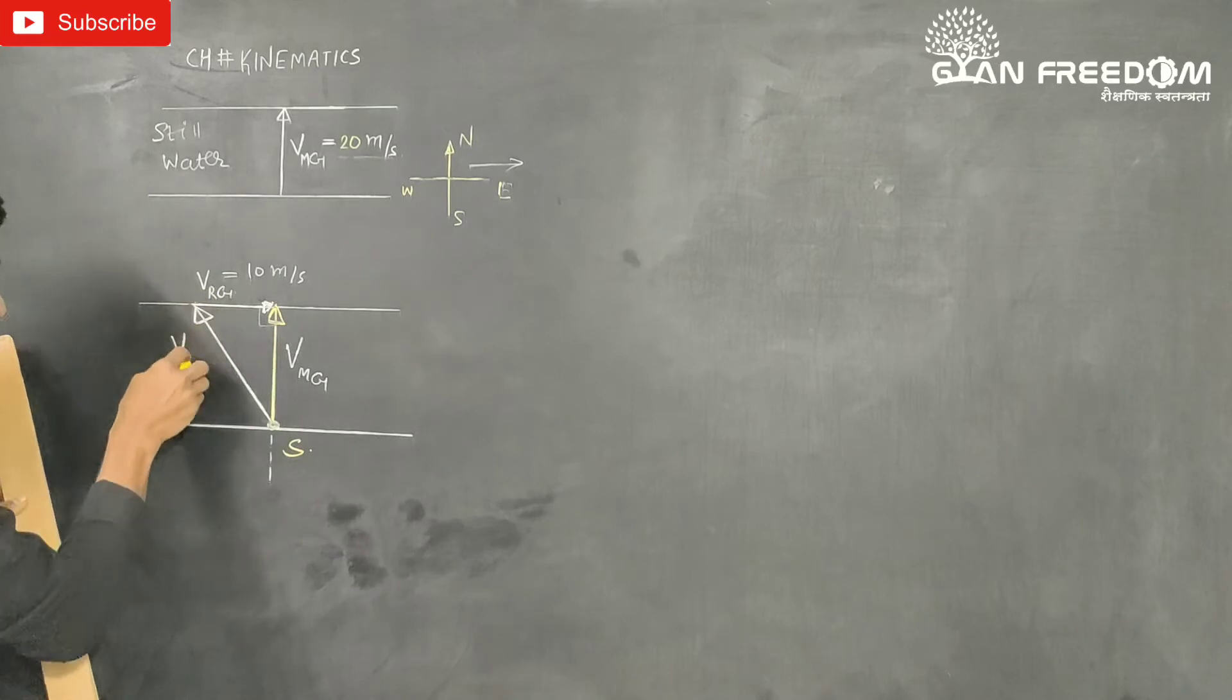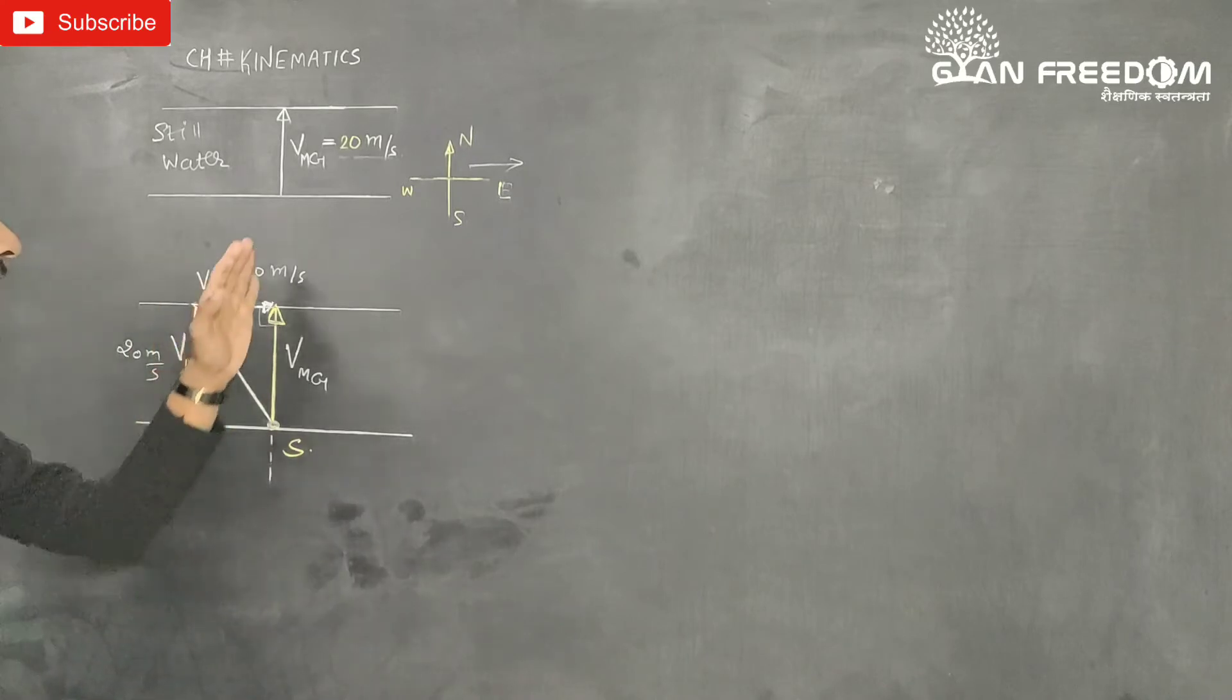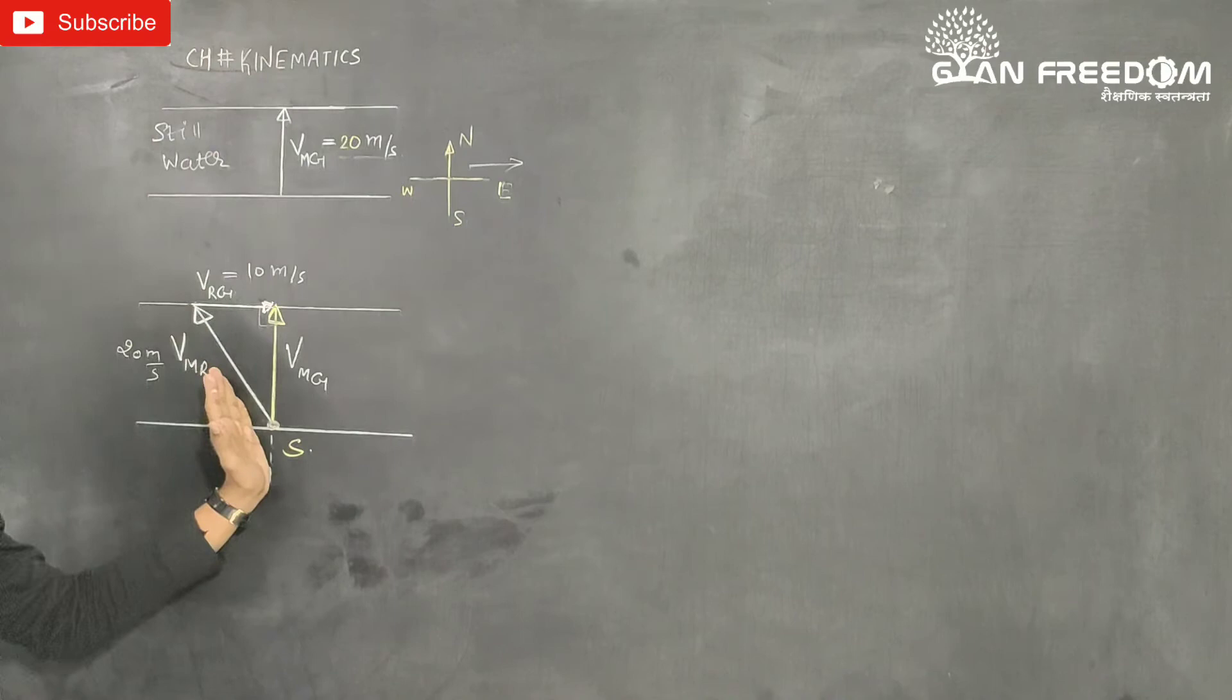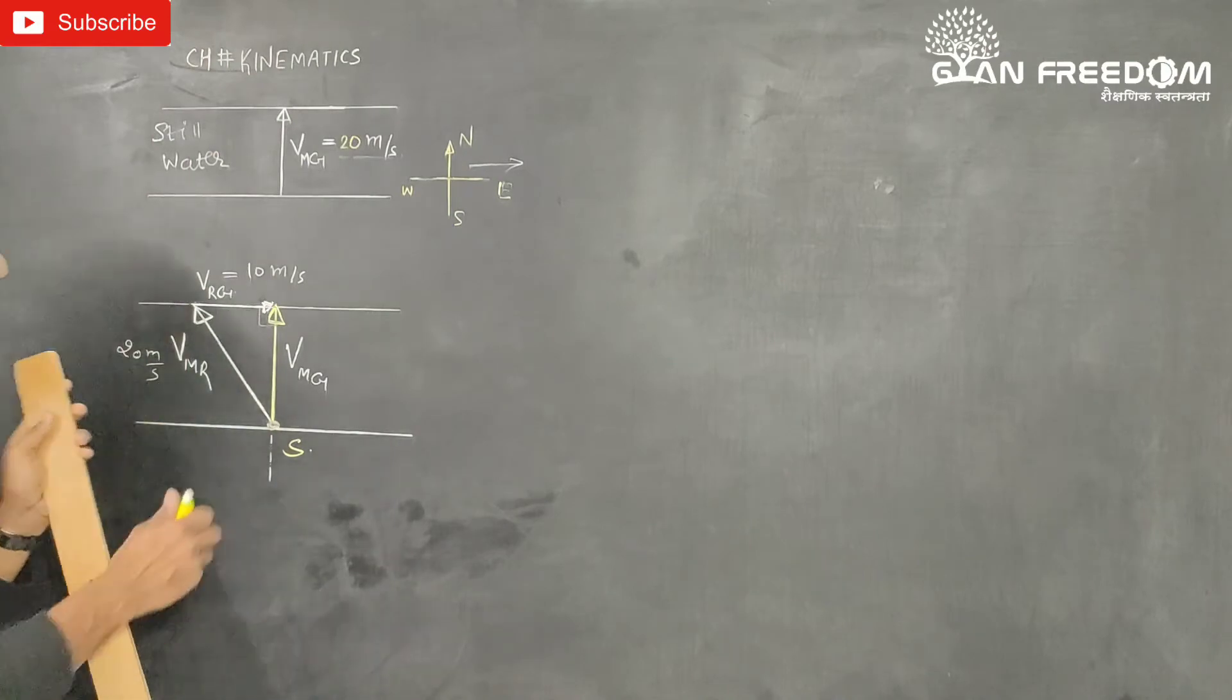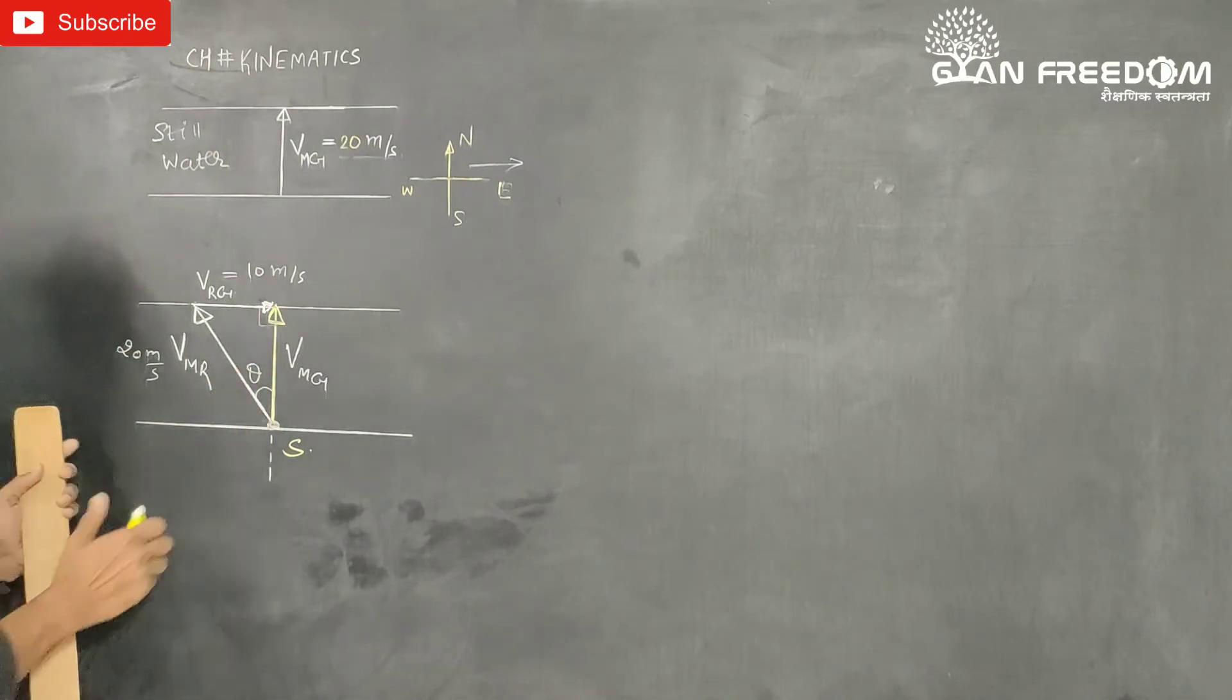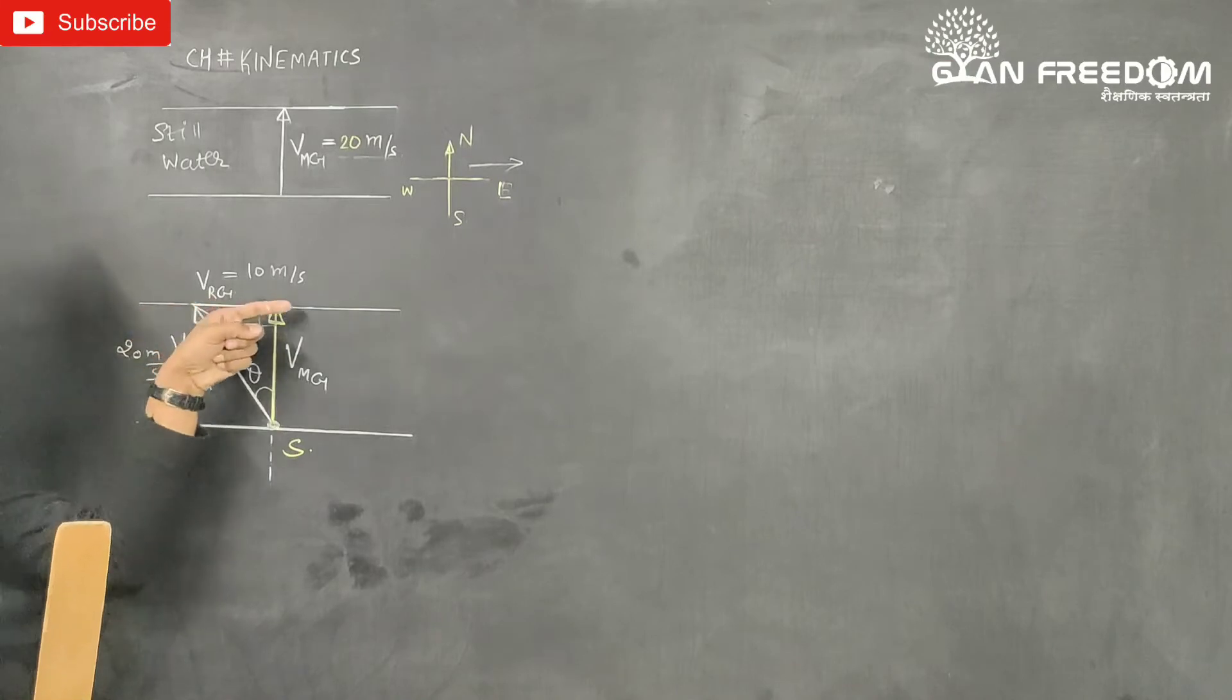This is the velocity of man with respect to river, which we will take 20 meter per second. Using triangle law, vector addition, first vector, second vector, this is the resultant.